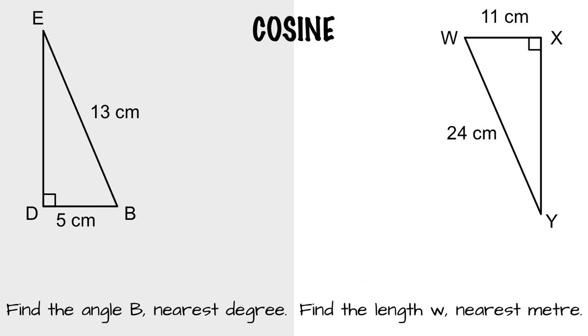And now our last ratio, cosine, otherwise known as CAH. So cosine is adjacent compared to the hypotenuse. Find angle B to the nearest degree. So cosine angle B is 5 compared to 13.